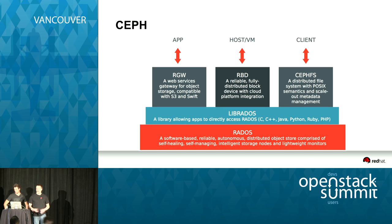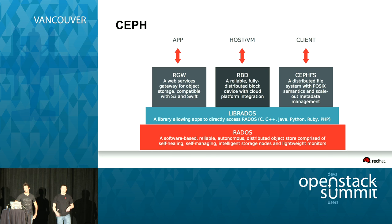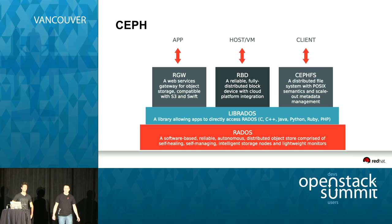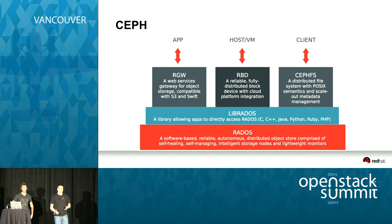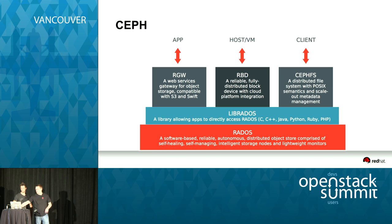The main components of Ceph are all built on top of a low-level object store called Rados. On top of Rados, we have three different interfaces you can expose to storage. Rados handles all the low-level details of replication and consistency, so building higher-level components like a block device or an object store is much easier. The three main components on top of Rados are Rados Gateway, which provides an S3 or Swift-like interface; RBD, which provides a block device for virtual machines or other workloads; and a file system called CephFS, which is the only component not completely stable yet.